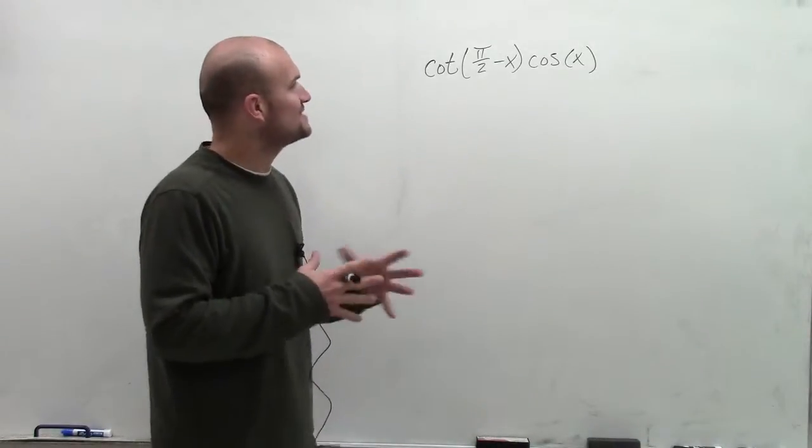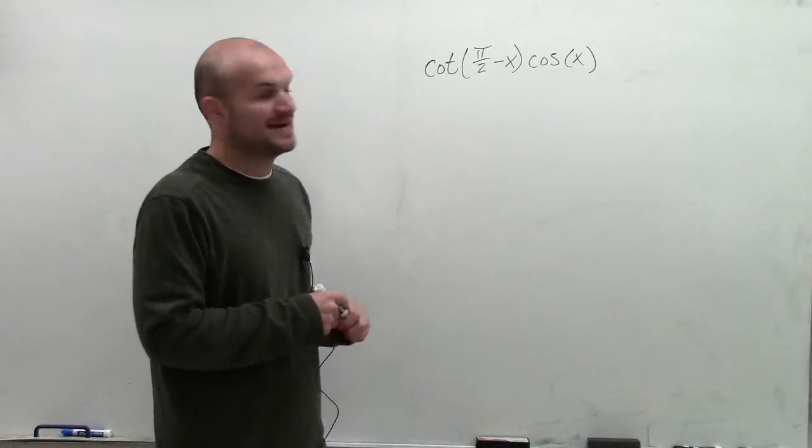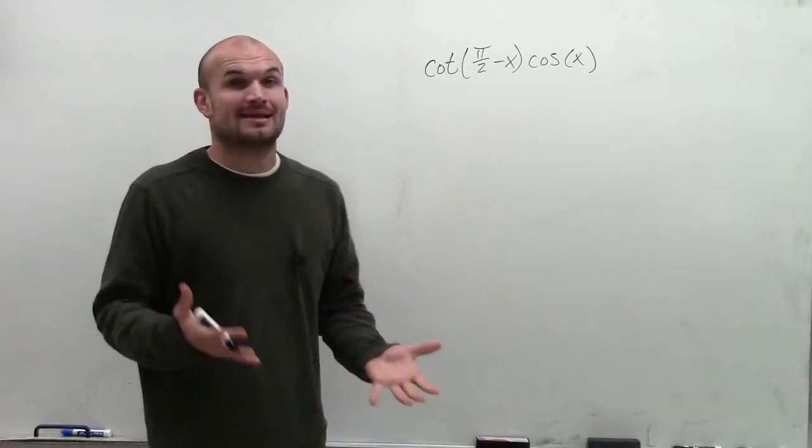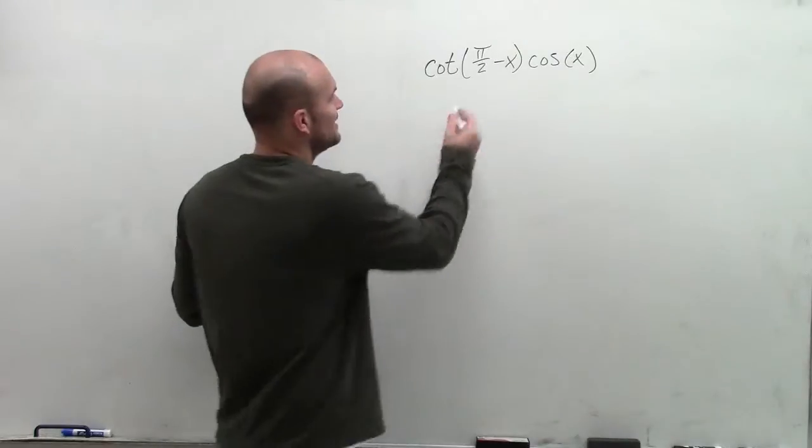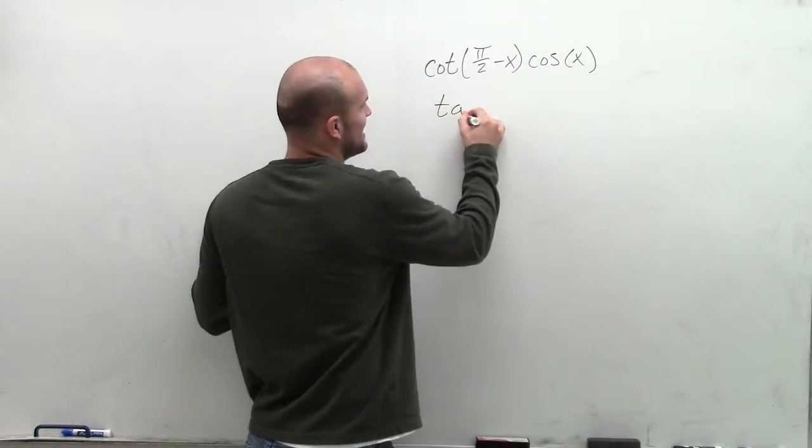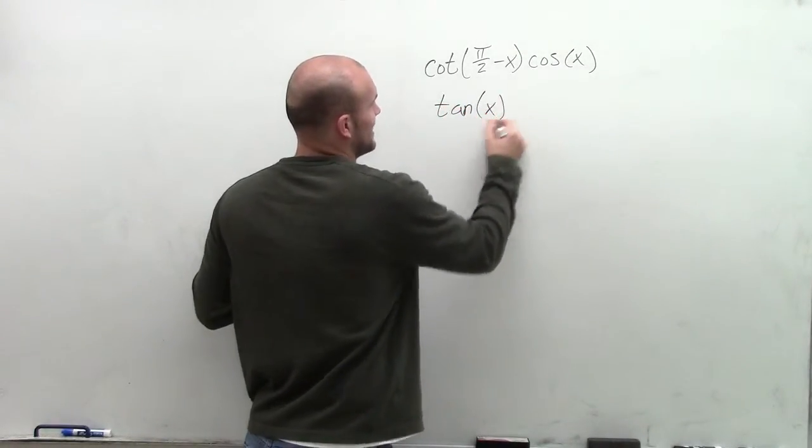So you're going to have cotangent of π divided by 2 minus x. Now how can I rewrite that using my co-function identities? Well, the cotangent of (π/2 - x) is equal to the tangent of x.